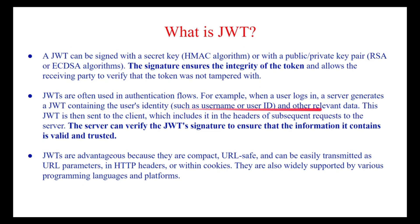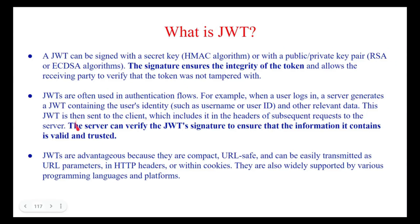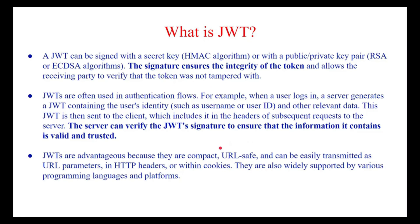JWTs are often used in authentication flows. When a user logs in, the server issues a JWT containing the user's identity and relevant data as claims in the payload. The front end then sends this JWT to the resource server. The back-end application verifies whether the JWT is properly signed: it encodes the header, encodes the payload, adds the secret, encrypts with HS256, and checks if the signatures match. If they match, the token is valid and not tampered with; otherwise, an authentication or authorization error is returned.